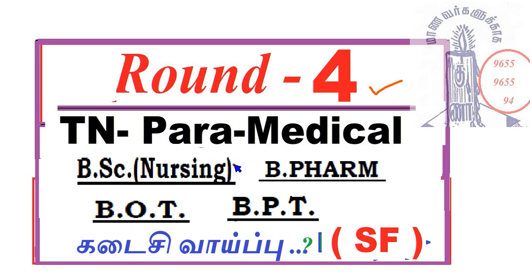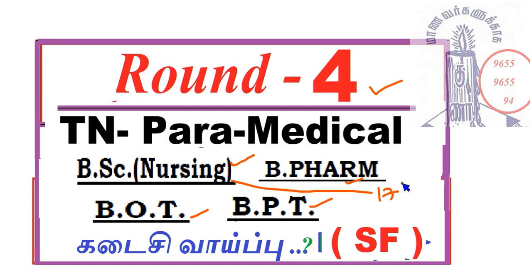In Tamil Nadu Paramedics, the courses are B.Sc Nursing, B.Pharm, BPT, and BOT. There are 4 BOT seats, 116 B.Sc Nursing seats, 34 B.Sc seats, and 39 B.Sc seats.